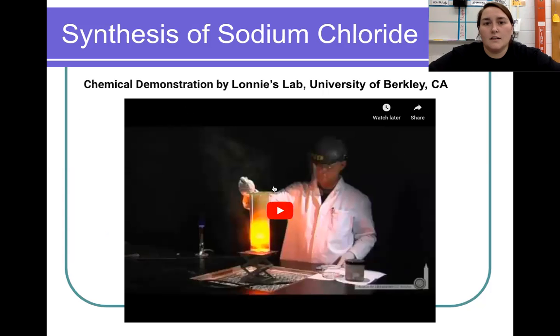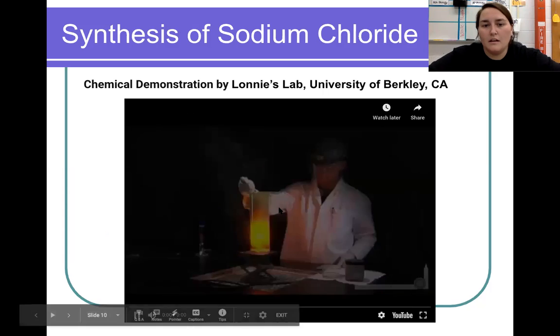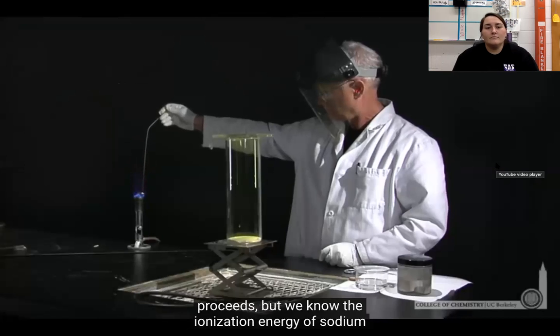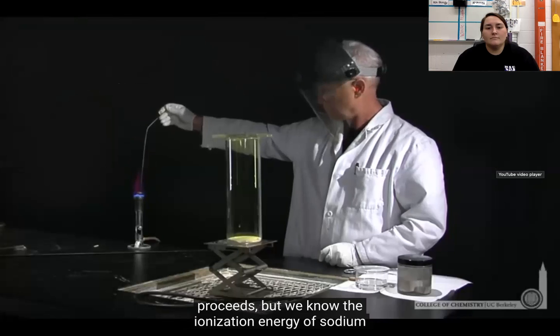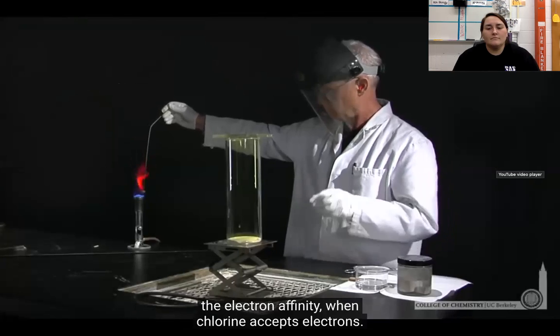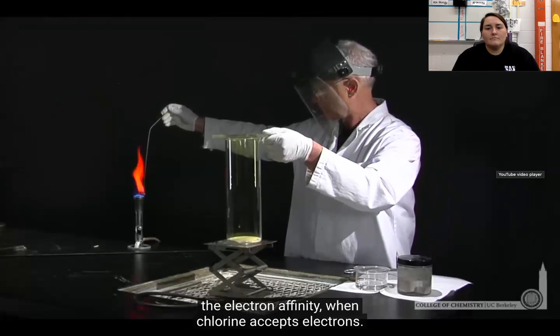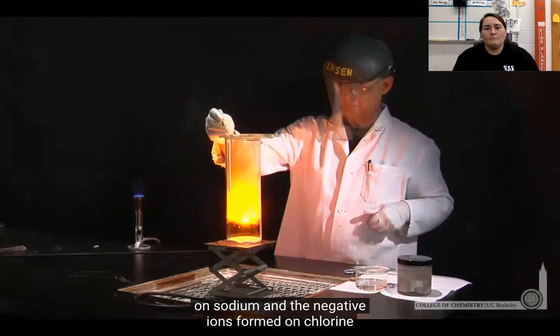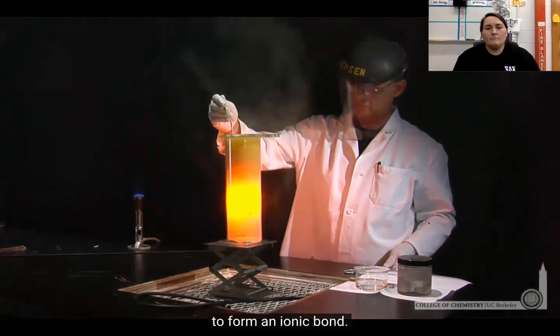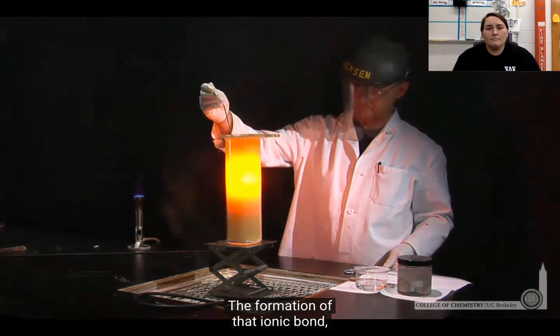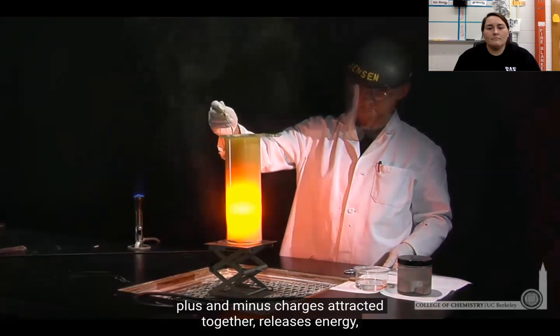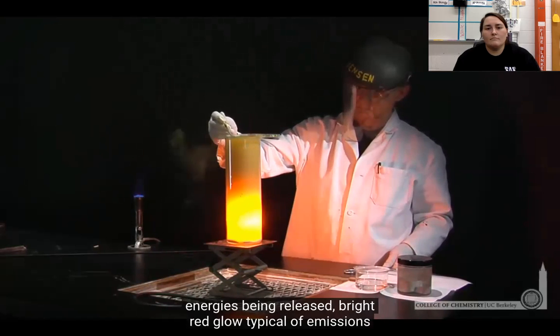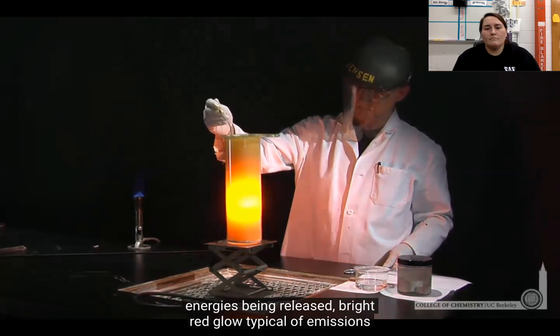This is showing you how sodium chloride is made. The reaction between sodium metal and chlorine gas proceeds—the ionization energy of sodium is greater than the energy released when chlorine accepts electrons. The positive ions formed on sodium and negative ions formed on chlorine are drawn together by coulombic interaction to form an ionic bond. That releases energy, which is the driving force for this chemical reaction. You can see it's exothermic—energy is being released with a bright red glow typical of emissions from sodium.